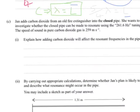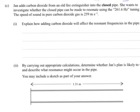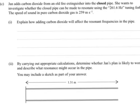Part C. Jan adds carbon dioxide from an old fire extinguisher into the closed pipe. This is going to be interesting. She wants to investigate whether the closed pipe can be made to resonate using the 261.6 Hz tuning fork. Speed of sound in pure carbon dioxide gas is 259 m per second. So that's quite a drop, 259 m per second from 343. Explain how adding carbon dioxide will affect the resonant frequencies in the pipe. That's interesting.